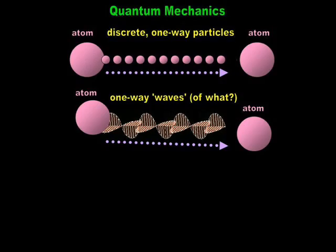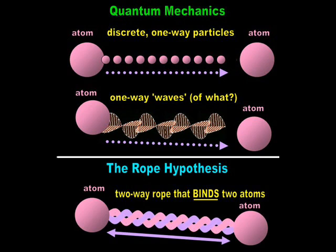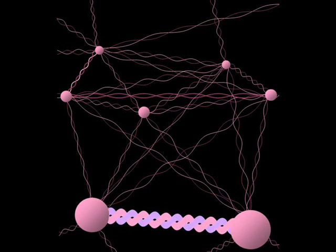Under the rope hypothesis, EPR has a very simple, rational explanation. Unlike in the religion of quantum, the atom does not emit one-way photon particles. Rather, all atoms in the universe are interconnected via electromagnetic ropes. Light is merely the torsion of an electromagnetic rope.